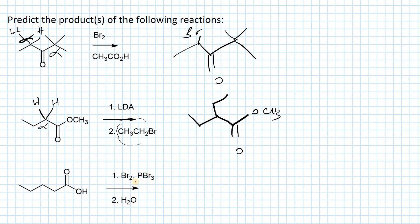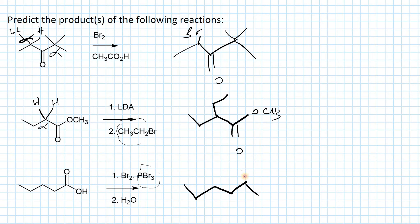The next reaction has a carboxylic acid with Br2 and PBr3 in the first step, followed by water. Alpha substitution of carboxylic acids is normally very slow, but PBr3 activates the acid. This is the Hell-Volhard-Zelinsky reaction: we form an alpha-bromo acid chloride intermediate, then hydrolyze with water back to the carboxylic acid, retaining bromine at the alpha position.